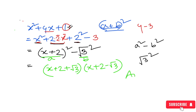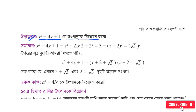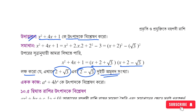1 is the answer. I think it's good to be able to get the answer. The answer is x plus 2 plus root 3. So 2 plus root 3 is the answer.